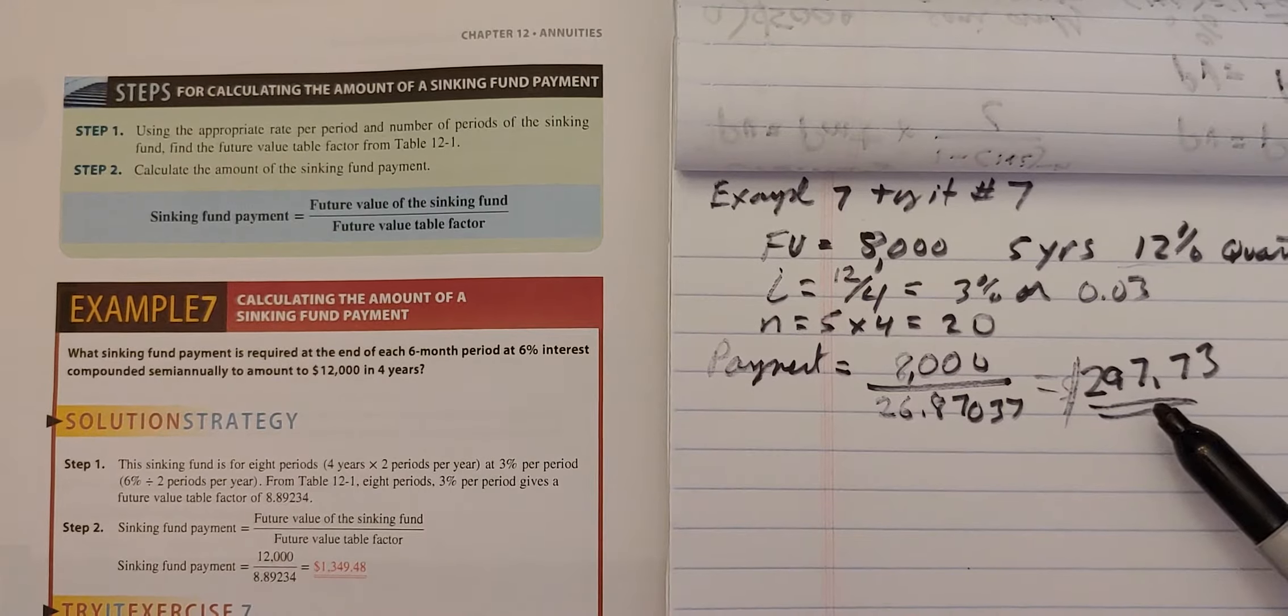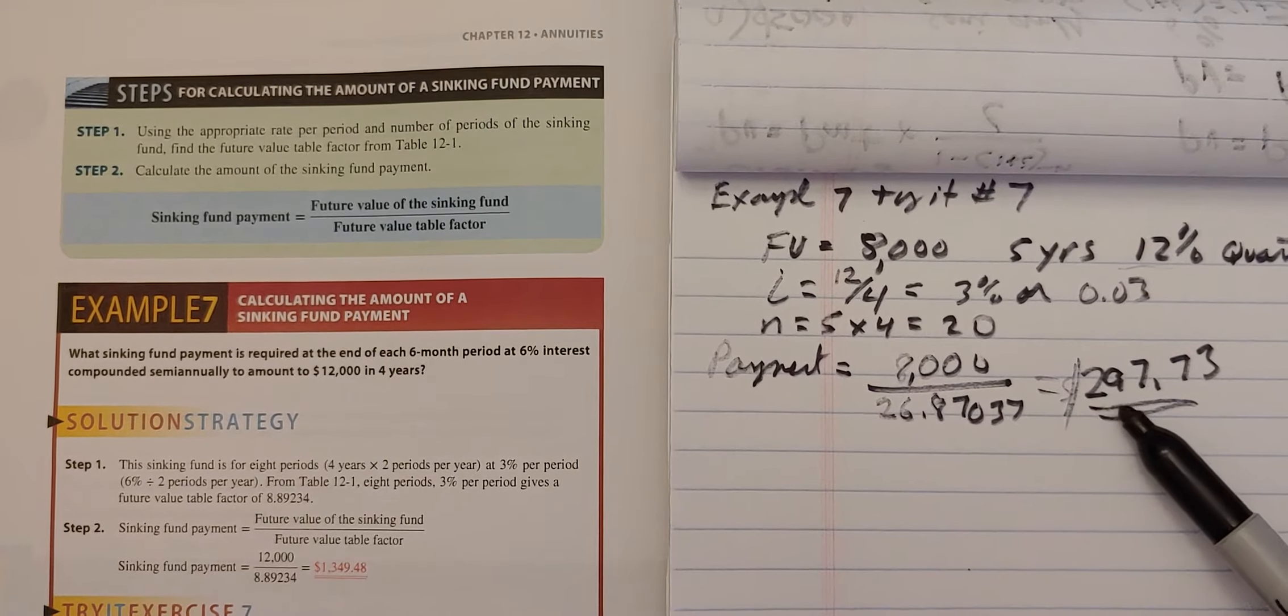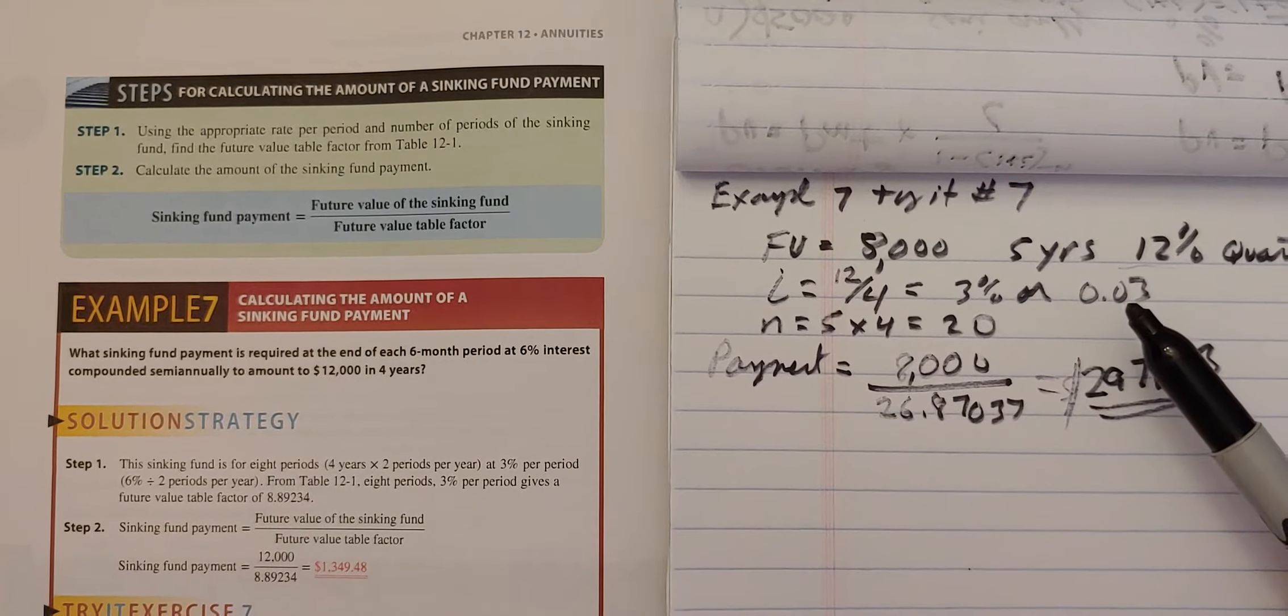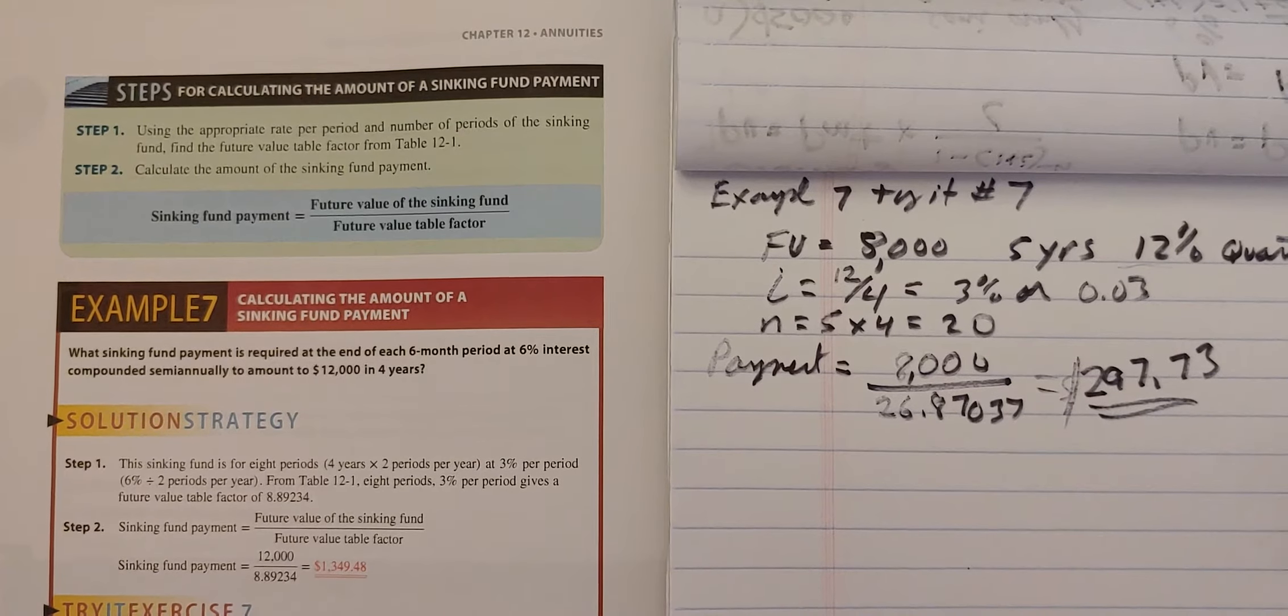So if I make, for every quarter, if I put away $297.73 for five years, I will have $8,000.